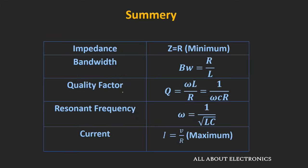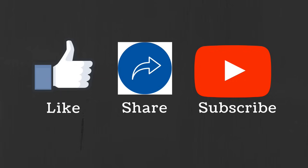In summary, these are the equations we derived for the series resonant circuit. I hope in this video you understood what resonance means in the series RLC circuit and the different parameters related to it, like quality factor and bandwidth. In the next video, we will see resonance for the parallel RLC circuit. If you have any questions or suggestions, please let me know in the comment section below. If you liked this video, hit the like button and subscribe to the channel for more such videos.